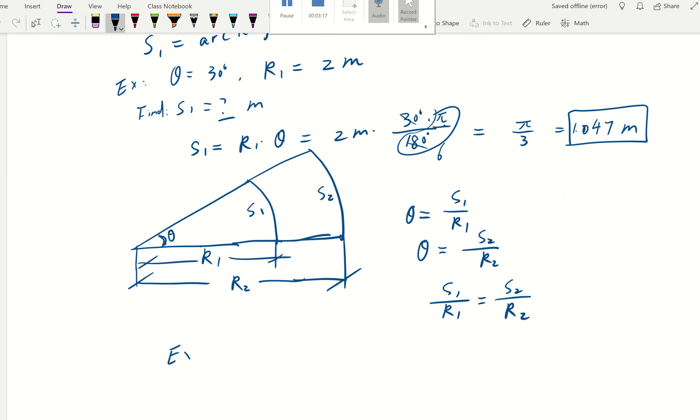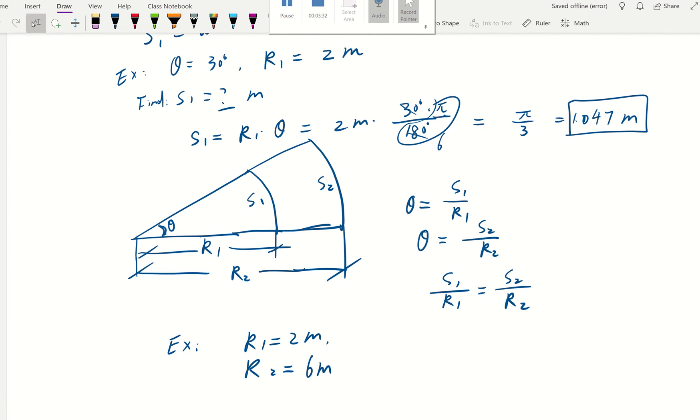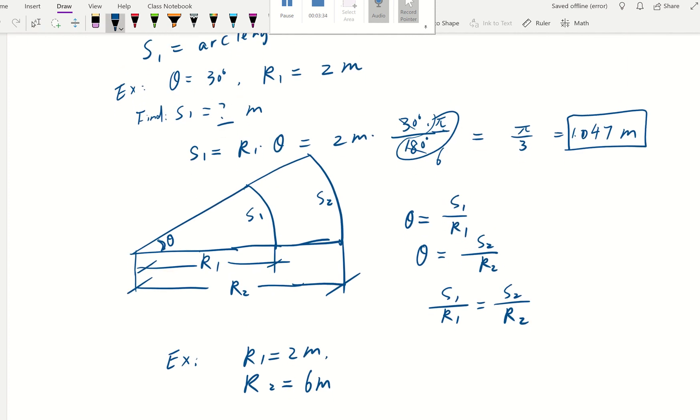We can make a simple example for that. In order to do this, we don't even need to know the angle. For example, if r1 is 2 meters and r2 becomes 6 meters.